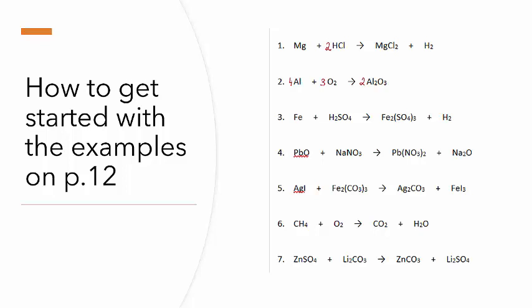Number three: on the left-hand side we've got one lot of iron, on the right-hand side we've got two, so I'm going to put a 2 here. The hydrogens — I've got 2 on this side and 2 on this side, so that looks correct. Sulfur: 1 on this side, 3 on the other, so I'm going to put a 3 here — and note that hydrogen is now unbalanced, so I'll fix that later. The oxygens: I've got 12 on this side and 12 on this side, so that's balanced. Then fixing the hydrogens — I've got 6 on this side, so I'll put a 3 here, and that's now balanced.